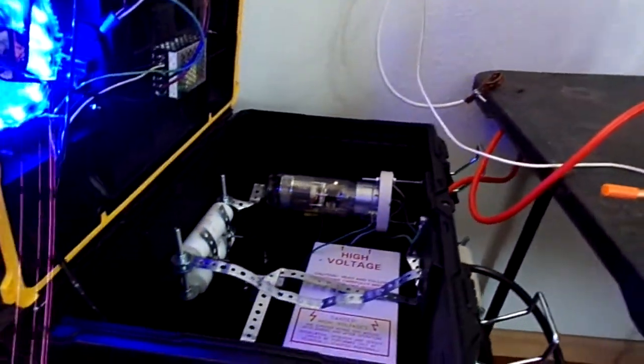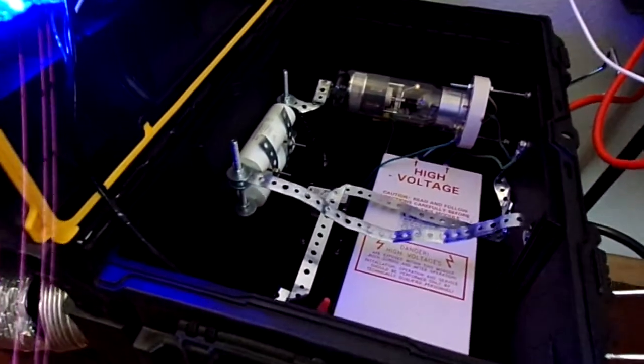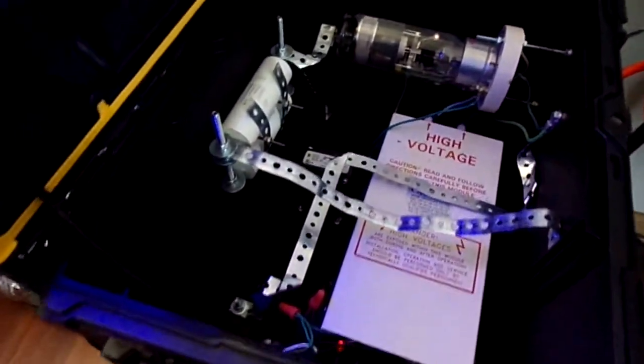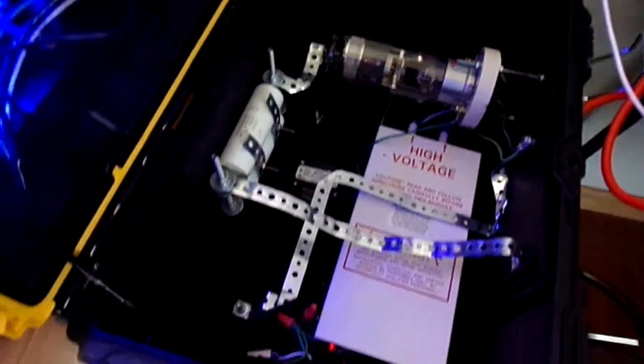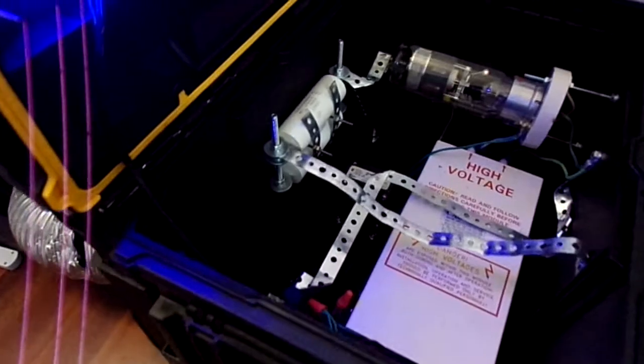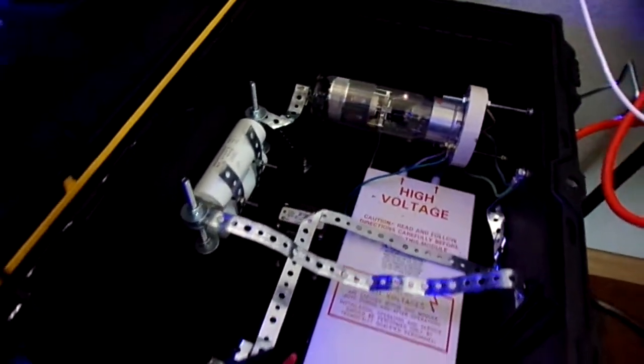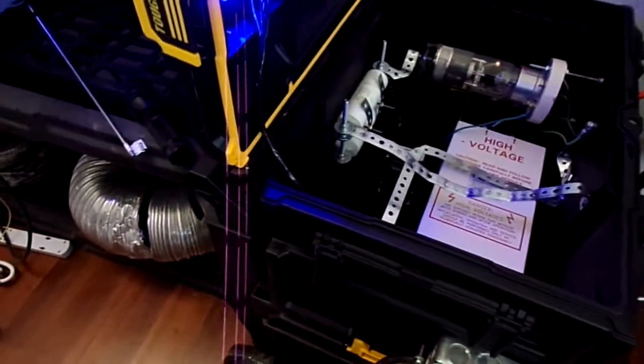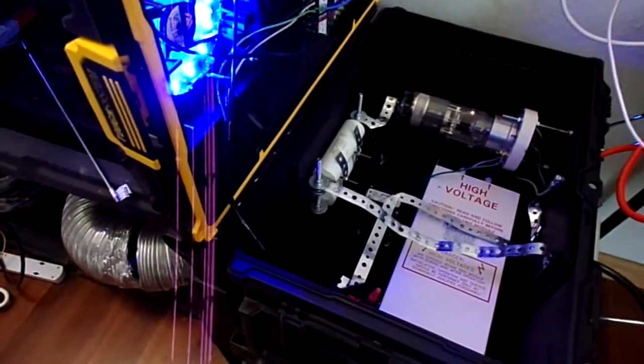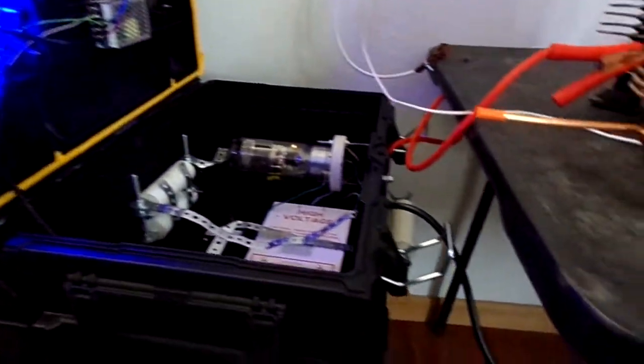Inside here we can see our actual system. There's the EG&G Thyratron grid driver and we got our capacitors and the Thyratron mounted. And yeah there's a fan so the fan can actually cool the system off while it's inside.